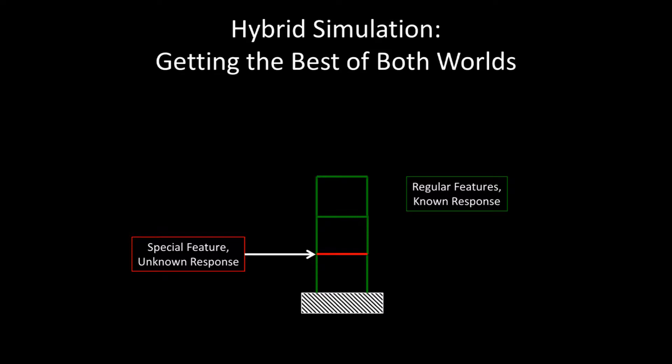We want to do something special to the first floor deck, but the rest of the structure is done using existing techniques. As a result, we know how most of the structure behaves, but we do not know how that special first floor is going to act. Because of this, we can't simulate the entire structure, and doing a full-scale test is expensive. This is a great situation to apply hybrid simulation.